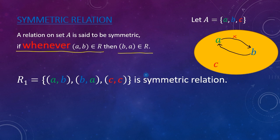b is related to a and c is related to c. Okay, so this relation fulfills our requirement to be symmetric.